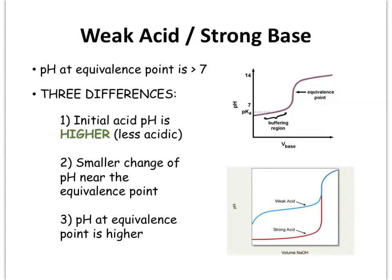There is a smaller jump in the pH at the equivalence point itself, compared to a strong-strong problem which has a much greater jump. And the equivalence point pH is much higher than 7, whereas in a strong-strong titration the pH would be 7 at the equivalence point. So these are some of the things that are different that you can see in the graphs themselves.